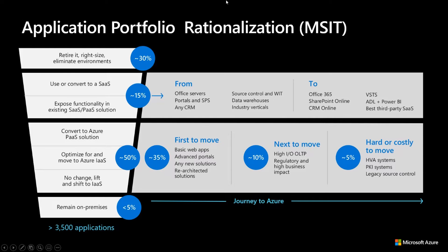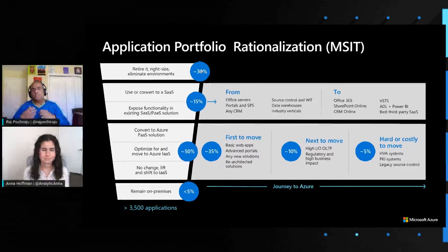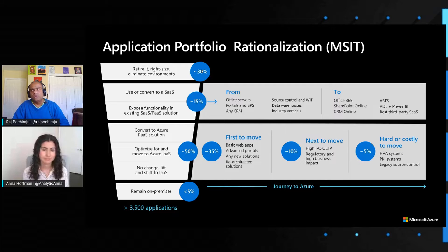Another 30% of the applications were also decided against cloud migration because either they were going to be retiring at some point, or their functionality had been absorbed into newer applications. This gave them an opportunity to eliminate workloads they didn't want to migrate to the cloud, which is really important — you want to prioritize which applications to migrate, which ones you don't, and in what order.